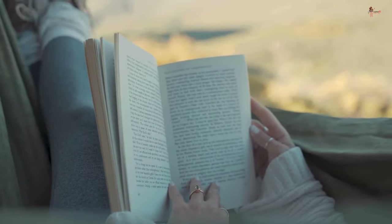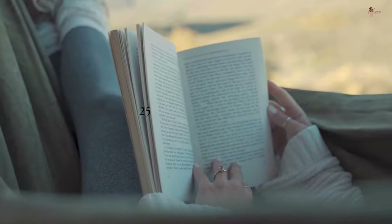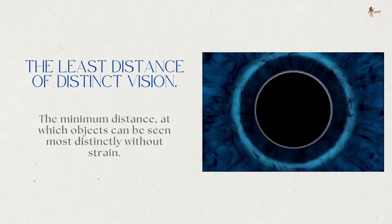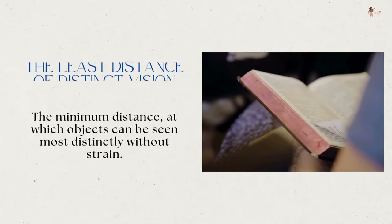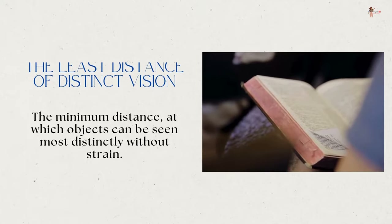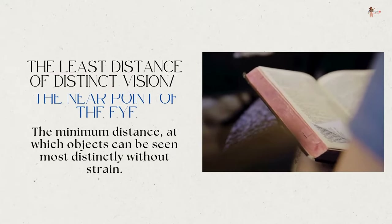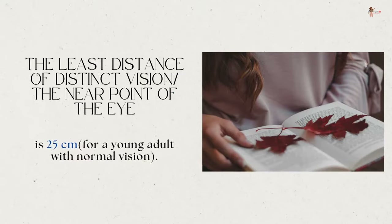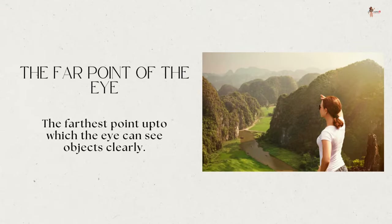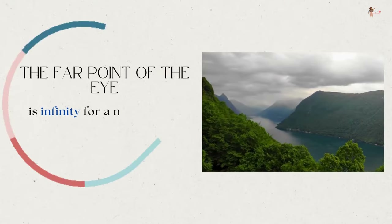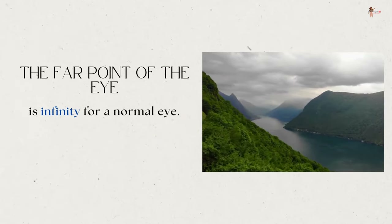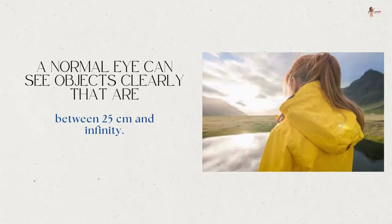Try to read a printed page by holding it very close to your eyes — you may see the image being blurred or feel strain. To see an object comfortably and distinctly, you must hold it at about 25 cm from the eyes. The minimum distance at which objects can be seen most distinctly without strain is called the least distance of distinct vision, also called the near point. For a young adult with normal vision, the near point is about 25 cm. The farthest point up to which the eye can see clearly is called the far point — it is infinity for a normal eye.